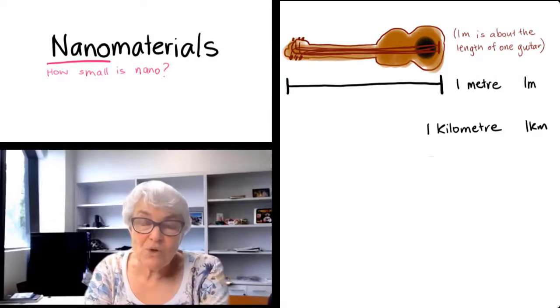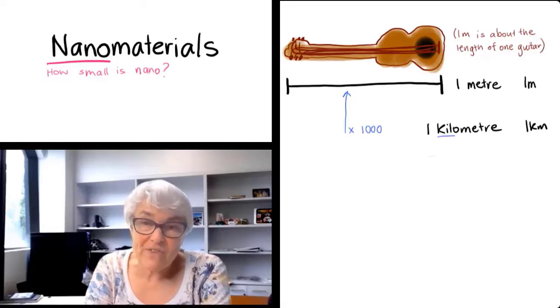If we talk about a kilometer, that means we're thinking about a thousand meters. So kilo means multiply by a thousand.